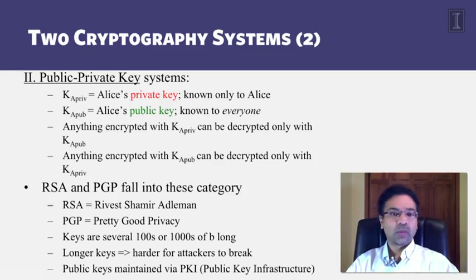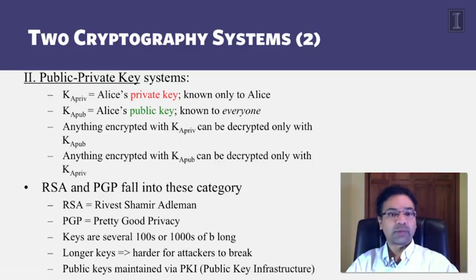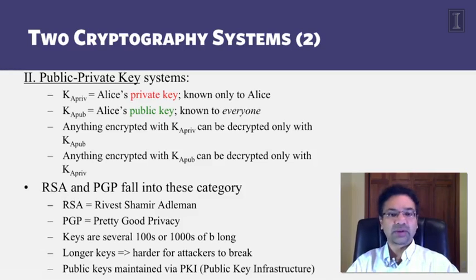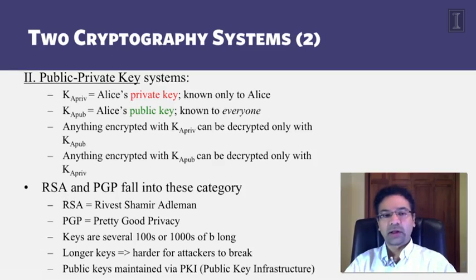Public-private key pairs are generated using well-known algorithms such as RSA (Rivest–Shamir–Adleman), which typically uses prime numbers. PGP (Pretty Good Privacy) is another example of a public-private key system. Keys need to be several hundreds — in some cases several thousands — of bits or bytes long. The longer the key, the more secure the system, because it becomes harder for attackers to guess or brute-force it. A very short key, say four bits, allows an attacker to cycle through all two-to-the-four combinations easily.